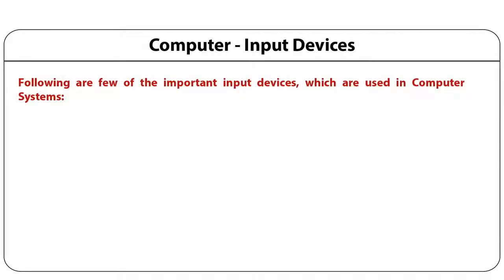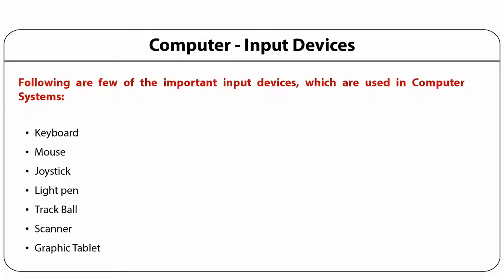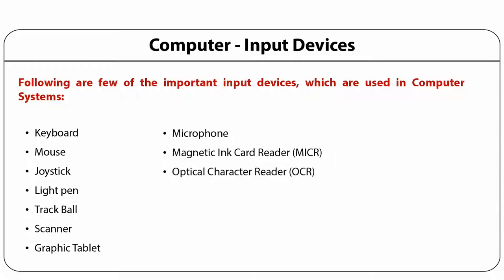The following are important input devices used in a computer system: keyboard, mouse, joystick, light pen, trackball, scanner, graphic tablet, microphone, magnetic ink card reader or MICR — we have seen MICR checks — OCR that is optical character reader, barcode reader and optical mark reader.